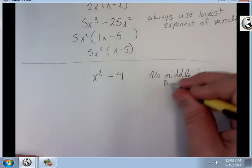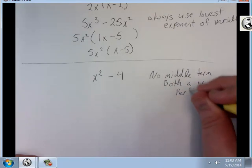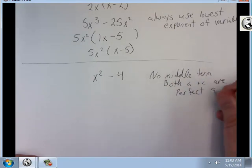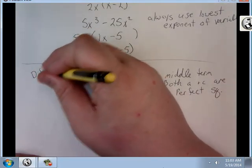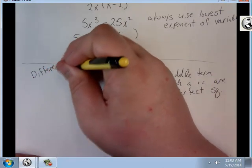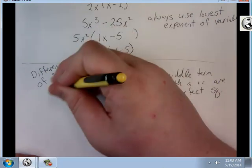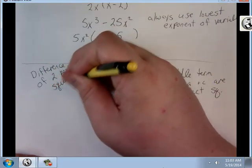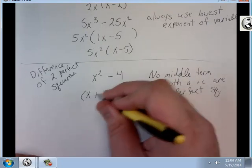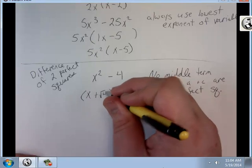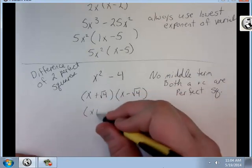So no middle term. Both a and c are perfect squares. So this is called difference of two perfect squares. It's going to be x plus square root and x minus square root, which we know that's just going to be x plus 2 and x minus 2.